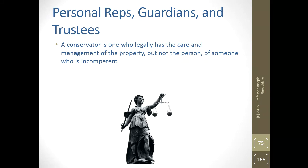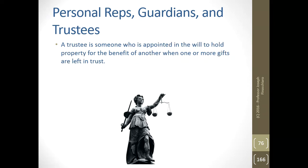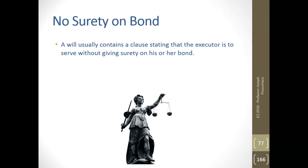A guardian is one who legally has responsibility over the care and management of a minor or incompetent person and their property. A guardian ad litem, or guardian for the suit, is a guardian appointed by a court to protect a minor who brings or defends a lawsuit. A conservator is one who legally has the care and management of the property but not the person of someone who is incompetent — they manage the assets but not the individual. A trustee is someone appointed in the will to hold property for the benefit of another when one or more gifts are left in trust.